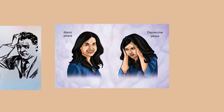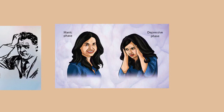The causes of bipolar disorder likely vary between individuals and the exact mechanism underlying the disorder remains unclear. Genetic influences are believed to account for 73-93% of the risk of developing the disorder, indicating a strong hereditary component. The overall heritability of the bipolar spectrum has been estimated at 0.71. Twin studies have indicated a substantial genetic contribution as well as environmental influence. For bipolar 1 disorder, the concordance rate in identical twins is around 40%, compared to about 5% in fraternal twins.